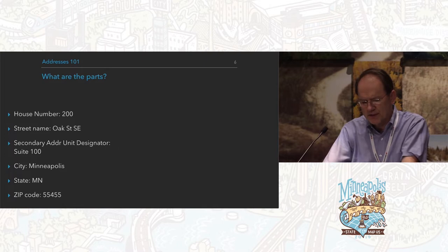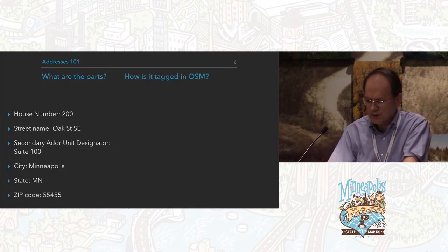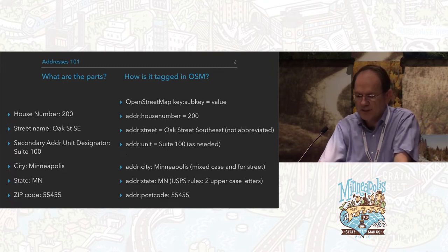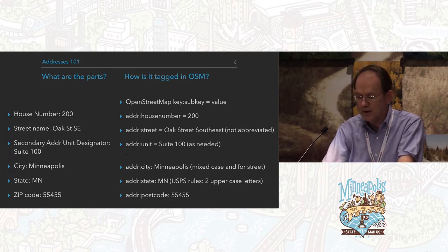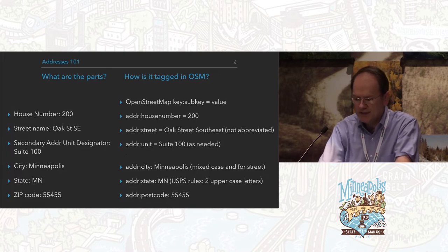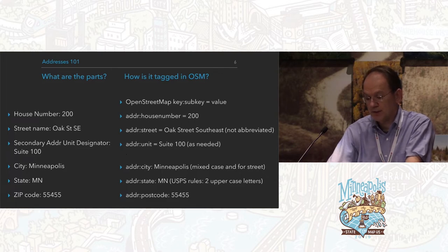What are the parts of an address? You get the house number, the street name, the secondary address unit designator. The city, the state, and the zip. In OpenStreetMap we use the keys: house number, street, unit, city, state, and postcode. We're a little schizophrenic — street is not abbreviated and it's mixed case. Minneapolis, the city, is mixed case, but the state is all uppercase because we're following the USPS convention.